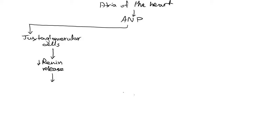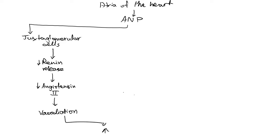Going back to the cascade: decreased renin release causes decreased angiotensin 2 release. One of angiotensin 2's effects is to allow for vasoconstriction, so if we decrease angiotensin 2 levels we allow for vasodilation, and subsequently a decrease in blood pressure. We've got an increased container with the same volume — if we increase the space that the volume is present in, we're decreasing the pressure.